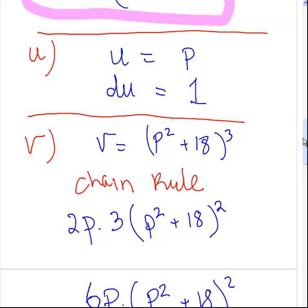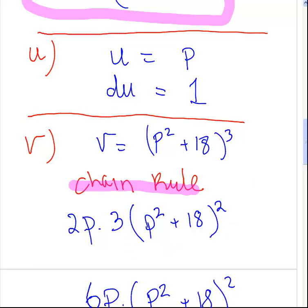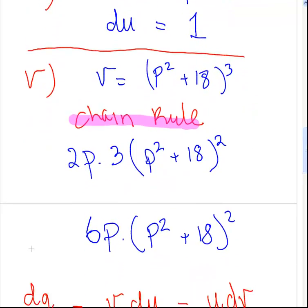Now for the denominator: V is equal to P squared plus 18, all cubed. What we're going to do here is employ the chain rule. First, we get the derivative of the inner component without regard to the cube — that is 2P. Then we get the derivative of the outer part: P squared plus 18 cubed is like X cubed, whose derivative is 3X squared, so it's 3 times that term squared. That works out to be 6P times P squared plus 18 squared.